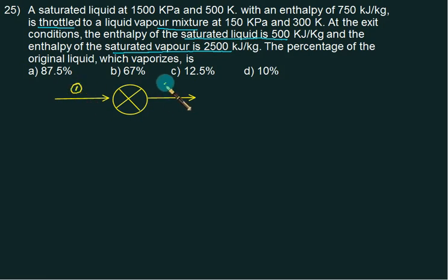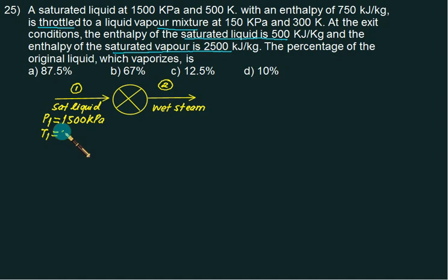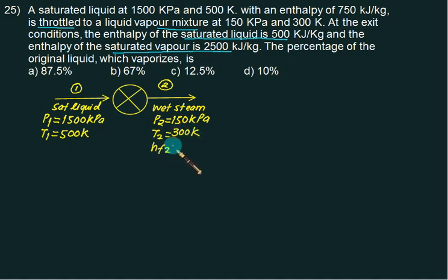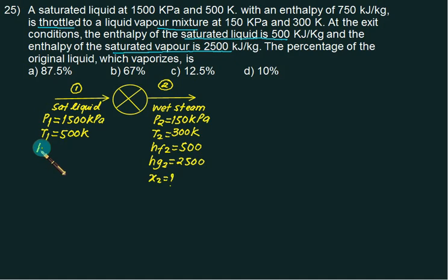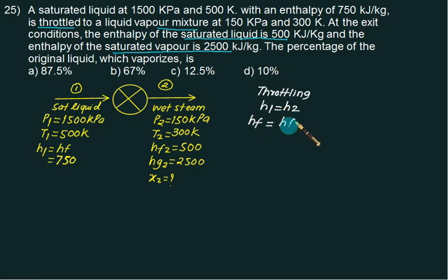This represents a throttling process: initial state is 1, final state is 2. Initially it is a saturated liquid (water), and finally it is wet steam. We are given P1 = 1500 kPa, T1 = 500 K, P2 = 150 kPa, T2 = 300 K, HF2 = 500, HG2 = 2500 at exit condition, and initial enthalpy H1 = HF1 = 750. Because of the throttling process, H1 equals H2, so H2 = HF2 + X2 × (HG2 − HF2).